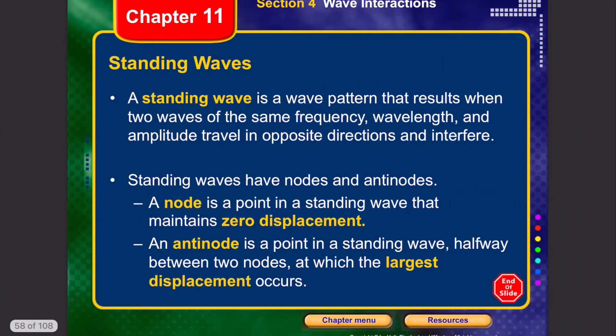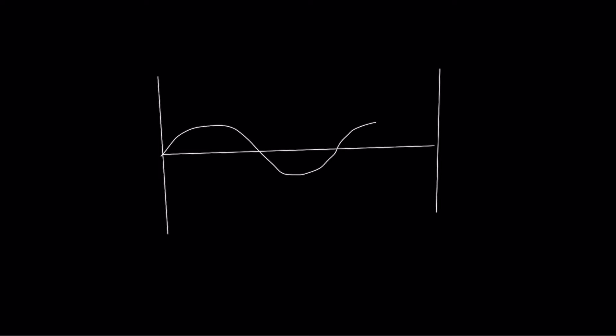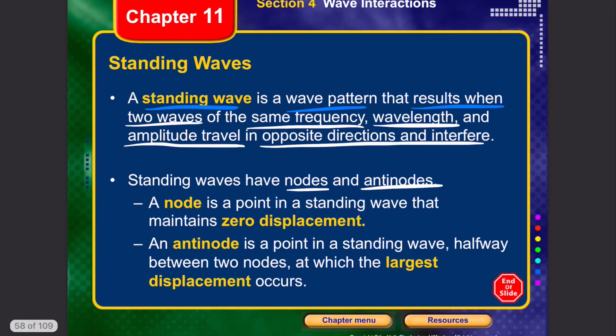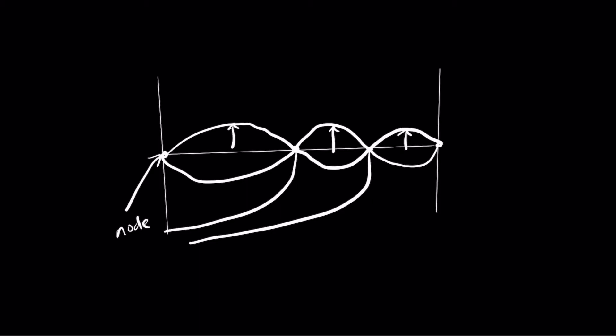Next, let's talk about standing waves. A standing wave is a wave pattern that results when two waves of the same frequency, wavelength, and amplitude travel in opposite directions and interfere. Standing waves contain nodes and antinodes. Here is an artistic representation of a standing wave — both waves have the same frequency and wavelength. The point where there is zero displacement is called a node, and the point with the highest displacement is called an antinode.